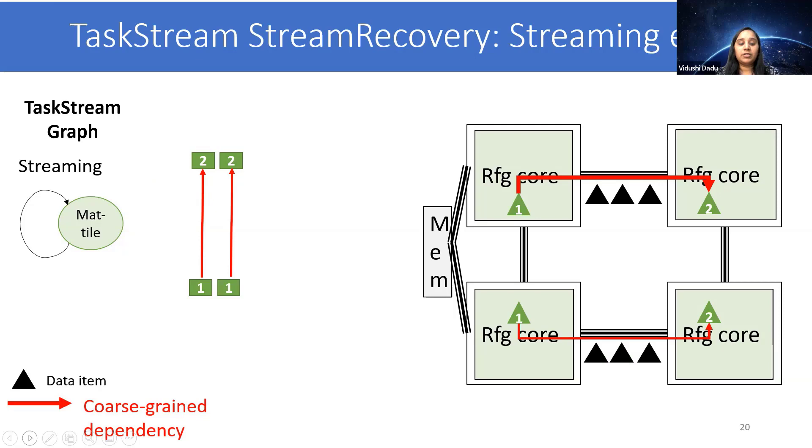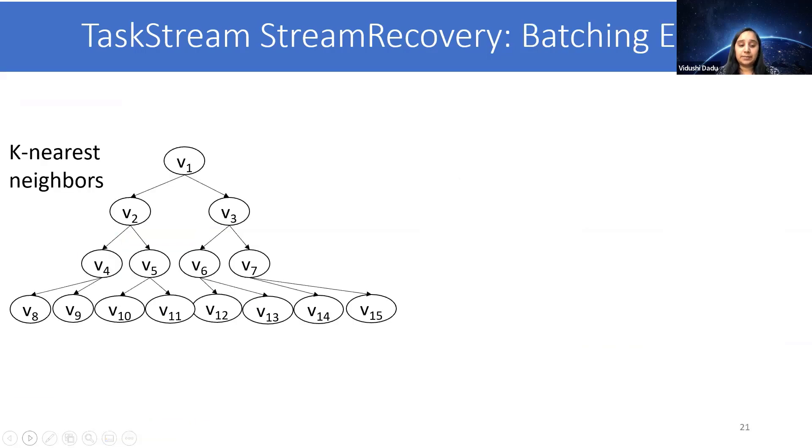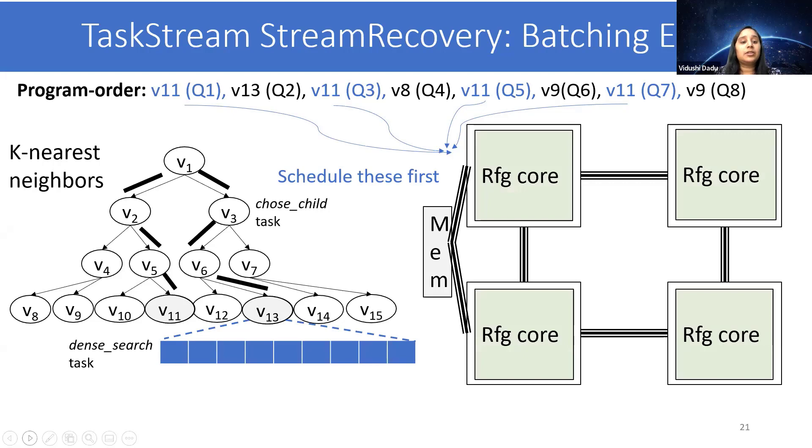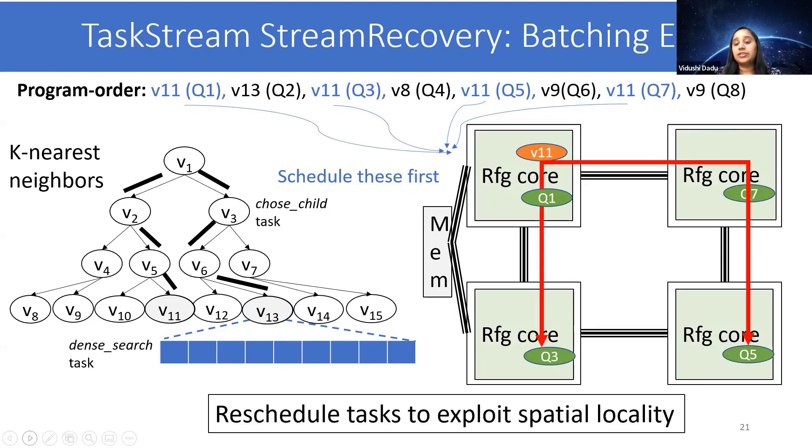Cholesky is a regular workload. However, we found that inter-task combination structure can occur in many irregular workloads as well. In this slide, I show the example of k-nearest neighbors where the implementation involves first traversing the KD tree in order to filter out the data range that we want to look into and then do a dense search. So for any KNN query, it would first traverse the tree. Then when it reaches the leaf node, it would do a dense search on the original data. And there can be multiple search parallel queries. So let's consider this example program order of queries. Here, I have marked the queries which end up on the same leaf node with the color blue. In our batching optimization, we dynamically identify this kind of reuse and schedule these together. So in this example, Q1, Q3, Q5, and Q7 would be scheduled at the same time, and then V11 would be accessed only once and multicast through them. Such rescheduling enables exploiting spatial locality.